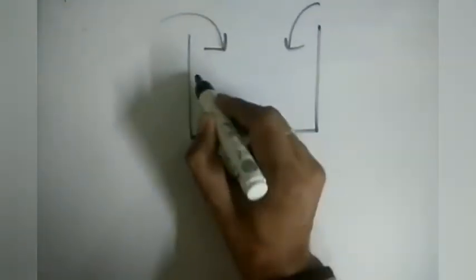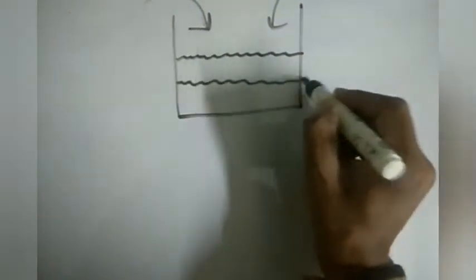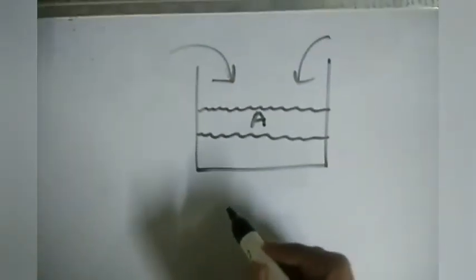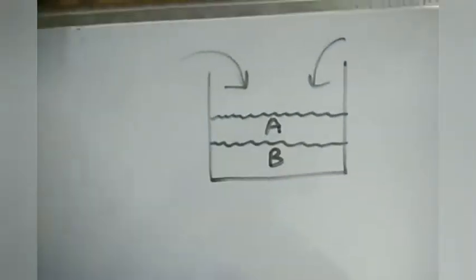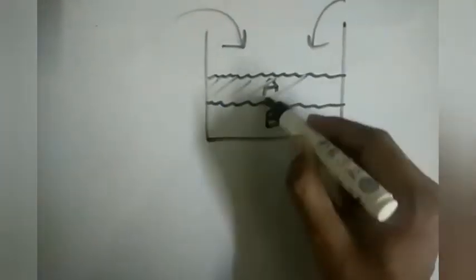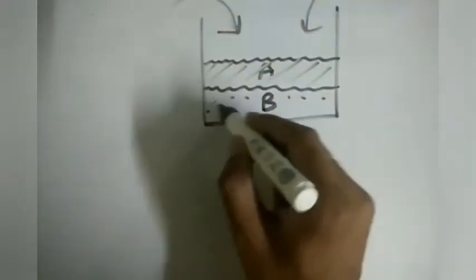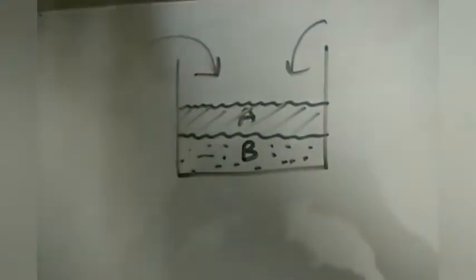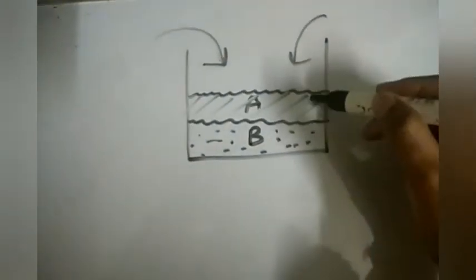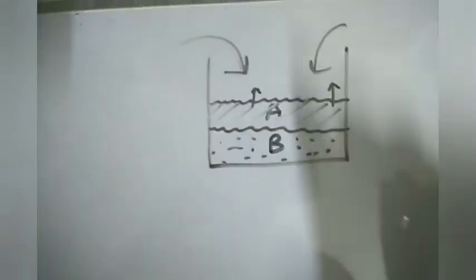Hello guys, welcome back to the YouTube channel of The Concept Guy. In this video we are going to talk about some really interesting concepts. Suppose we have a beaker and we have two immiscible liquids poured into it — let's say this is liquid A and this is liquid B. Both are immiscible, meaning this is one phase and this is another phase; they do not mix. Now if I want to know what pressure the mixture will exert and how it will boil.